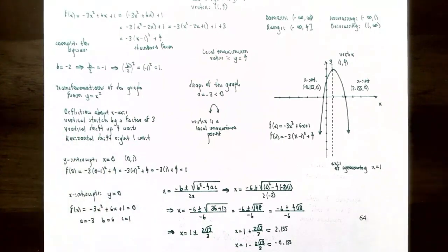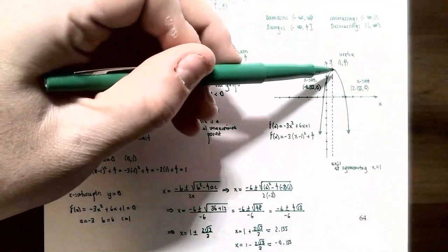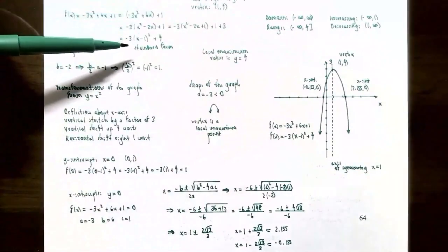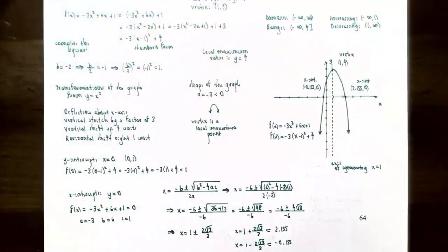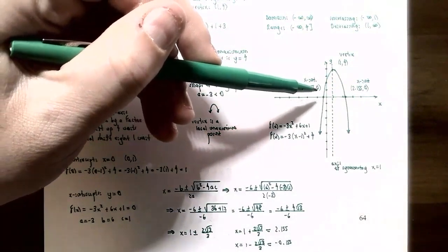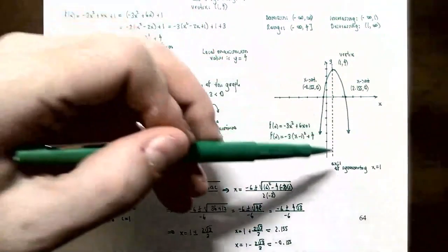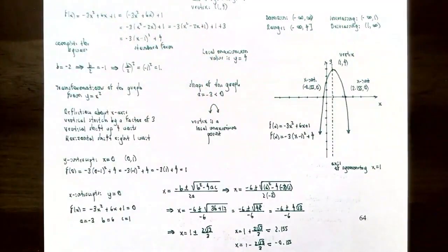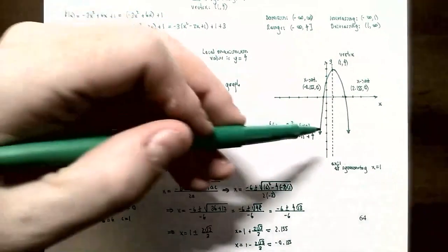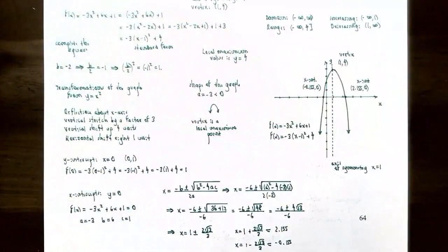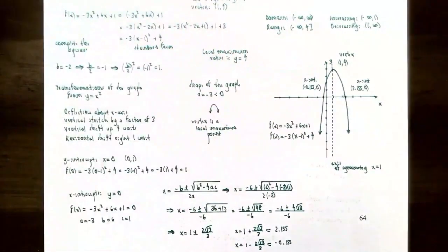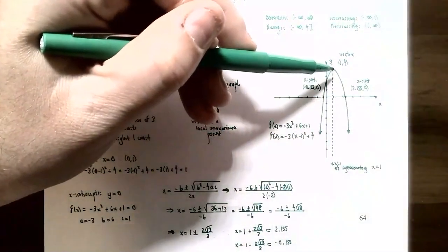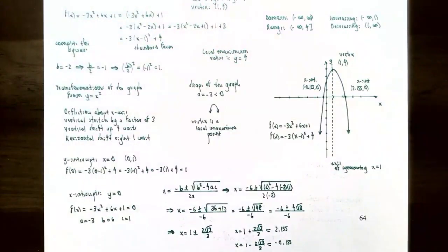Putting it all together: the vertex is at (1, 4), the x-intercepts are at approximately (2.155, 0) and (−0.155, 0), the axis of symmetry is x = 1, and the y-intercept is (0, 1). The domain is (−∞, ∞), the range is (−∞, 4], the graph increases on (−∞, 1) and decreases on (1, ∞).